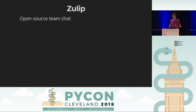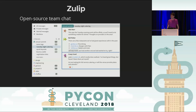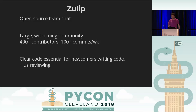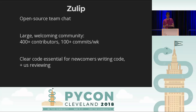Now I'm working on Zulip, which is an open source team chat application — you might have heard of it. Core Python dev has started to use it. The thing we're most proud of as a product is it has threads that work, supporting real, substantive discussions more so than you can get in Slack or IRC, and it makes it possible to not be constantly on and not miss things. We've had over 400 people contribute to the code, with over 100 commits every week from typically dozens of people.